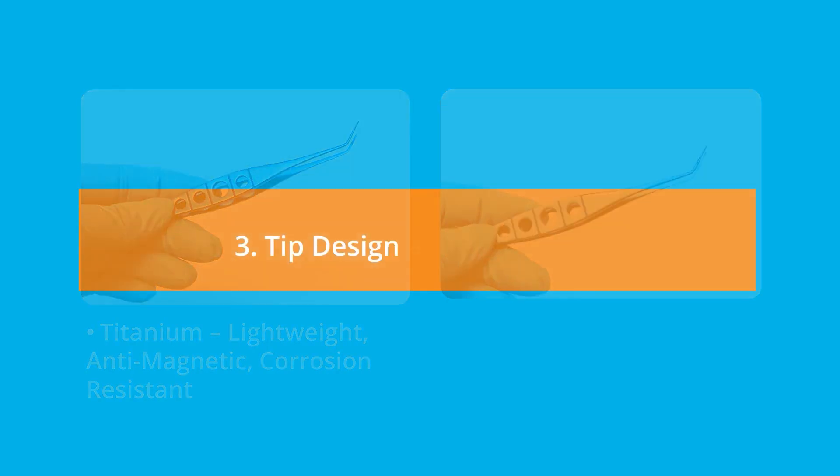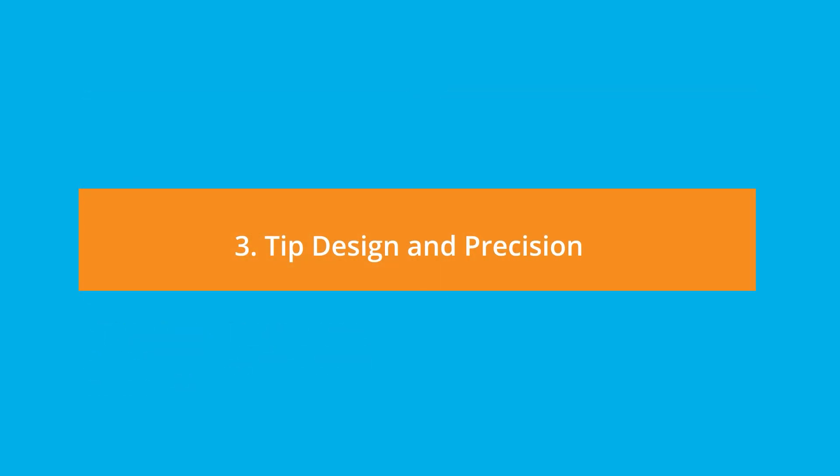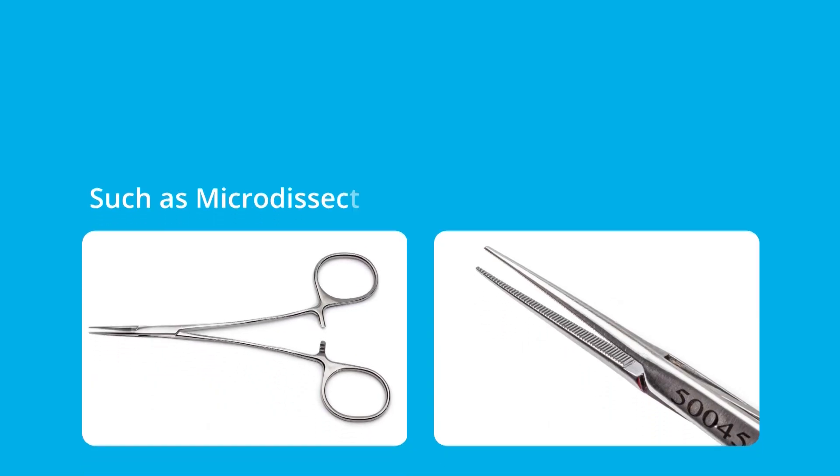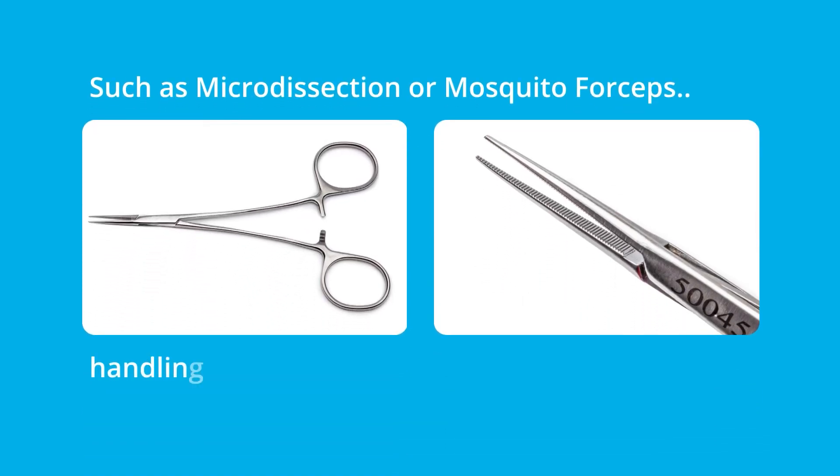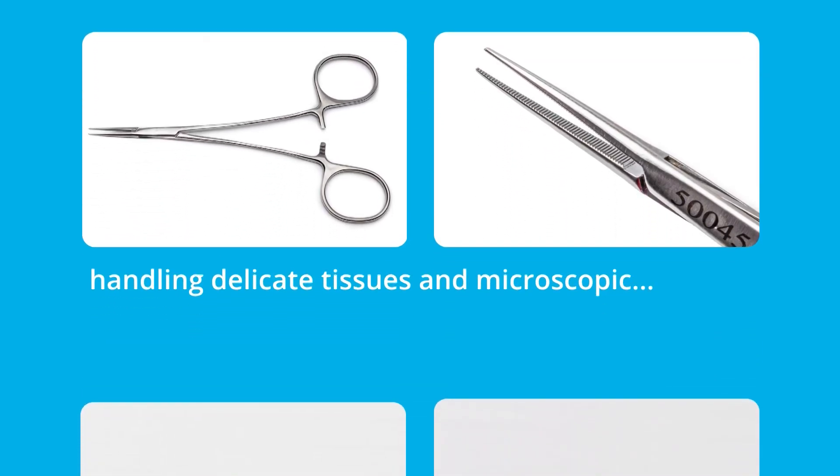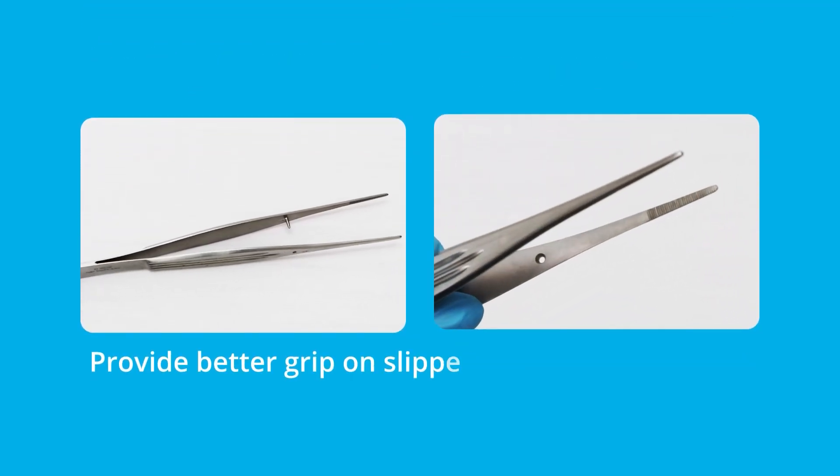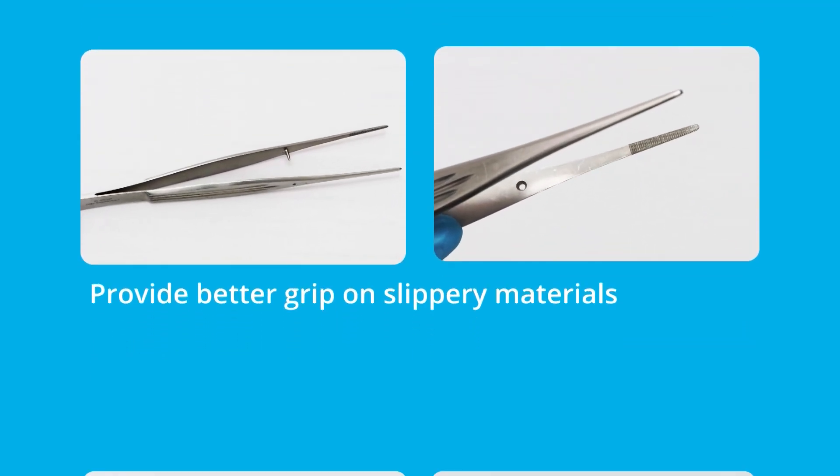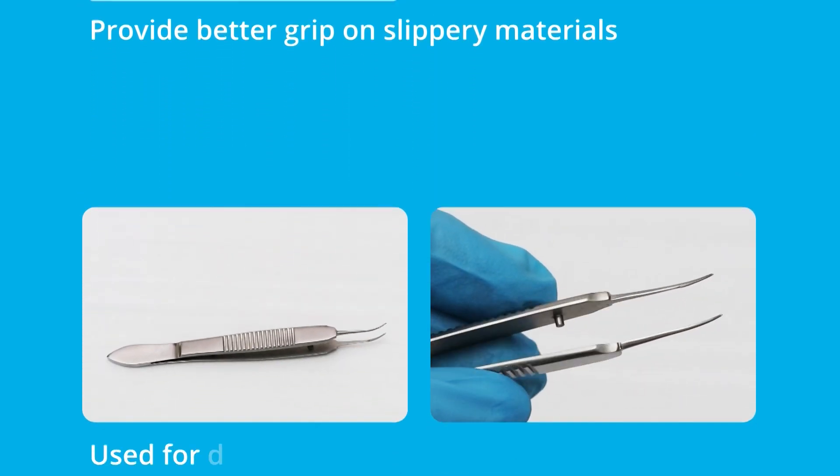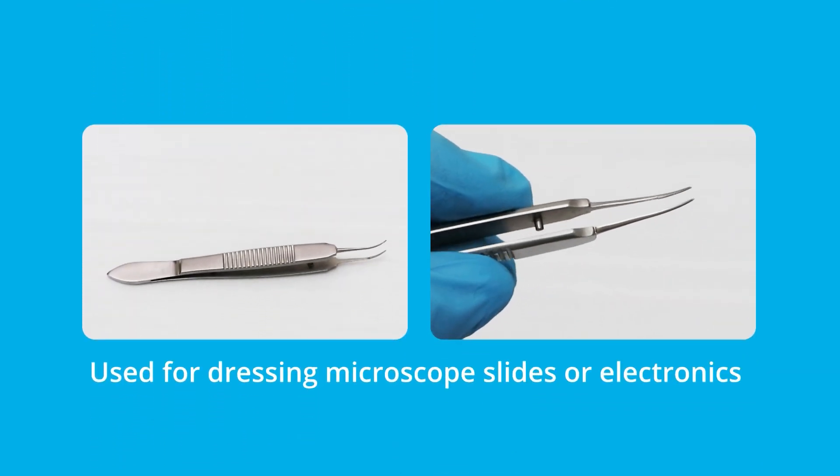Third, consider the tip design and precision. The tips of forceps play a crucial role in its functionality. Fine-tipped forceps, such as microdissection or mosquito forceps, are ideal for handling delicate tissues and microscopic samples. Serrated tips provide a better grip on slippery materials, while smooth tips are used for dressing, microscope slides, or electronics.